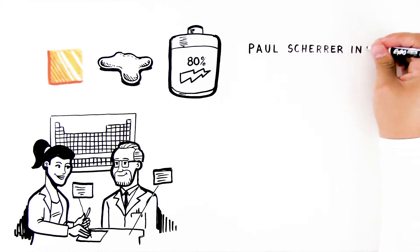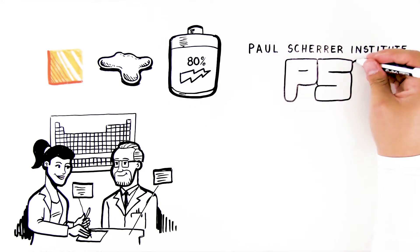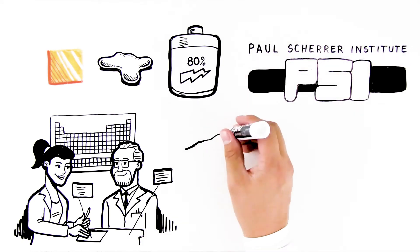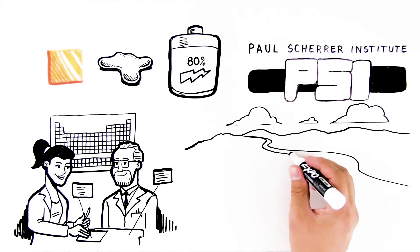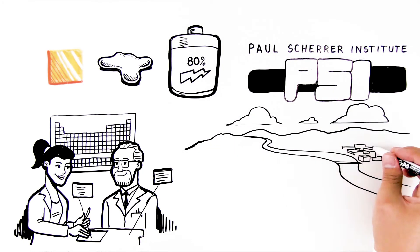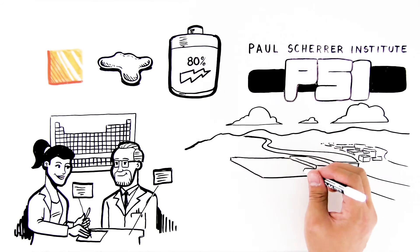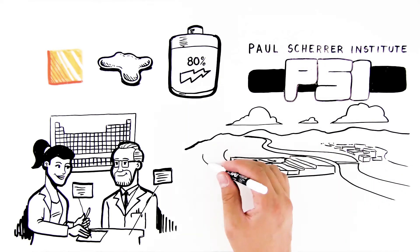This is the work the Heavy Elements Group does at the Paul Scherrer Institute, or PSI. Using the large research facilities of PSI, we design and construct setups and test these with radioactive isotopes of homologues under study.